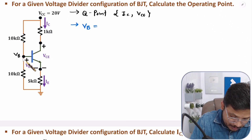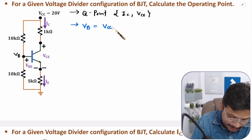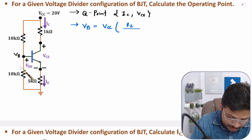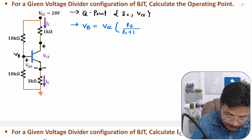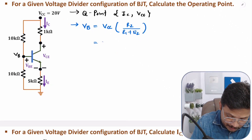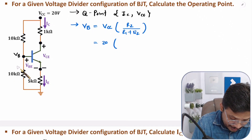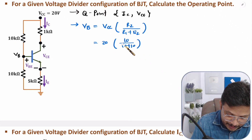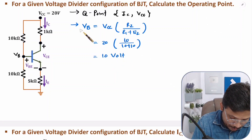VB equals VCC times R2, divided by R1 plus R2. VCC is 20, R2 is 10, and R1 is also 10. So VB equals 20 divided by 2, which gives 10 volts.